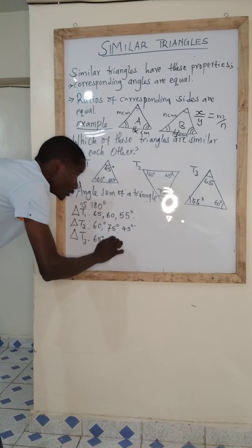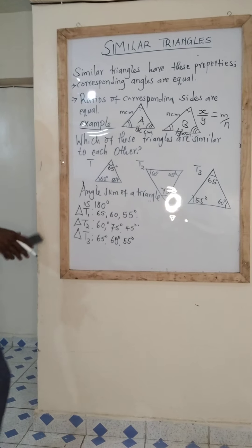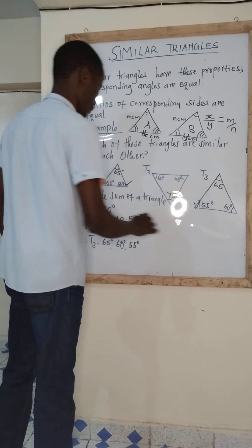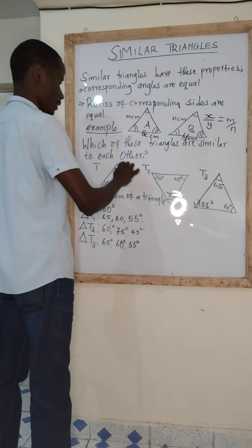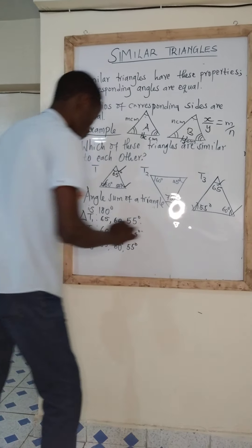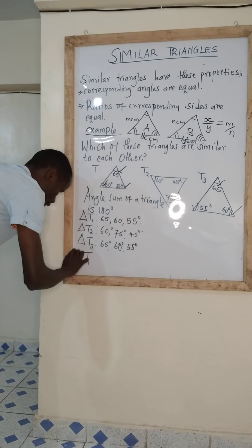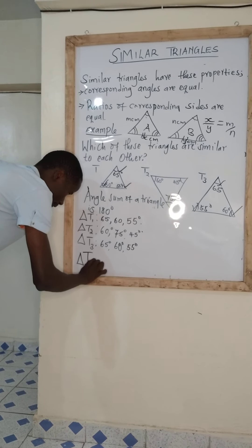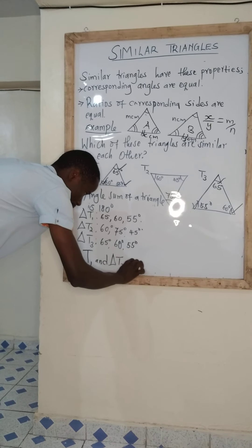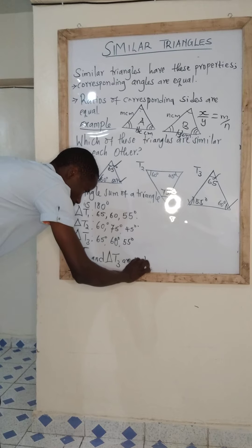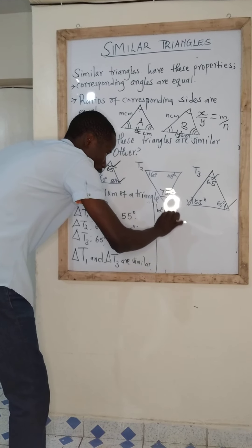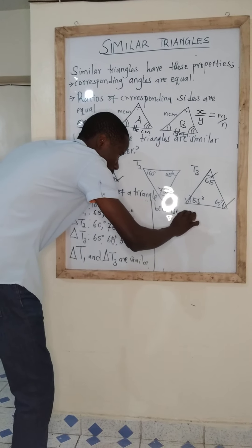Looking at these corresponding angles, this angle here corresponds to this angle — 55 degrees. Then this angle here corresponds to this angle, and this one here corresponds to this angle. So we are saying triangle T1 and triangle T3 are similar, because corresponding angles are equal.